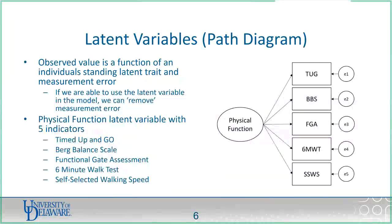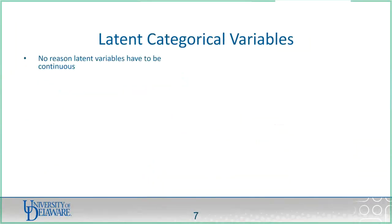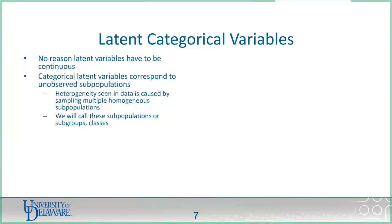This is typically where people leave latent variables — as an underlying continuous latent construct. But there's no reason the latent construct itself has to be continuous; it could be categorical. When it's categorical or nominal, we're grouping people into a certain group. People typically think of latent categorical variables as unobserved subpopulations, and the heterogeneity we're seeing in the observed data is actually caused by mixing multiple smaller subpopulations. In the literature, we call these subpopulations classes.